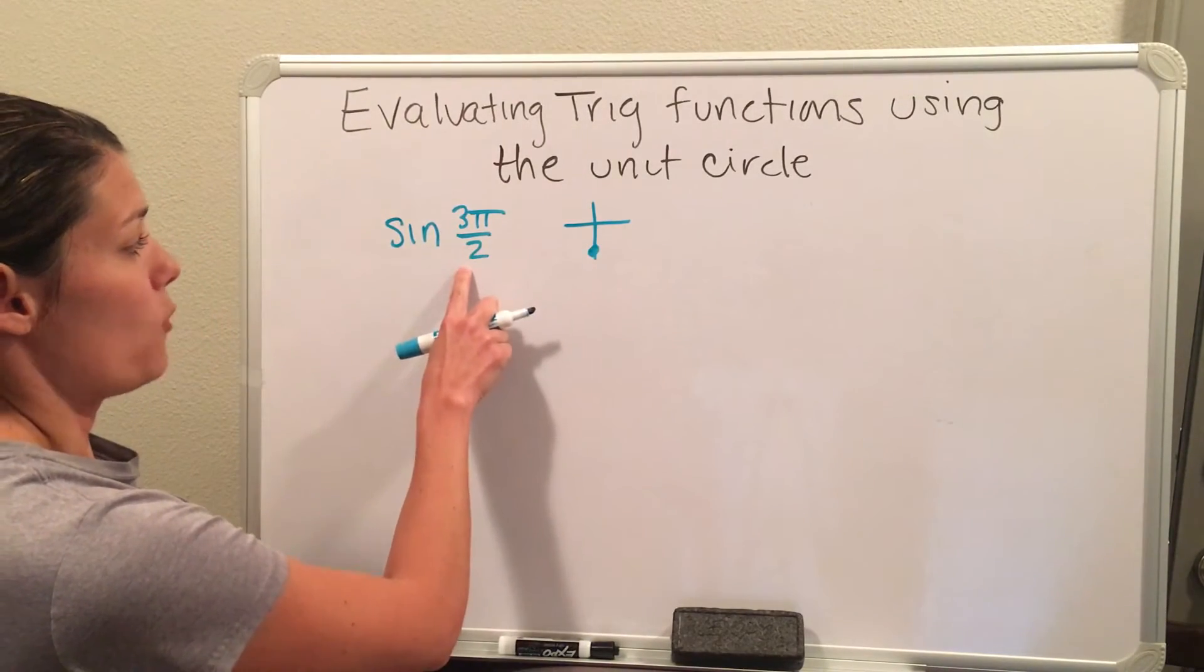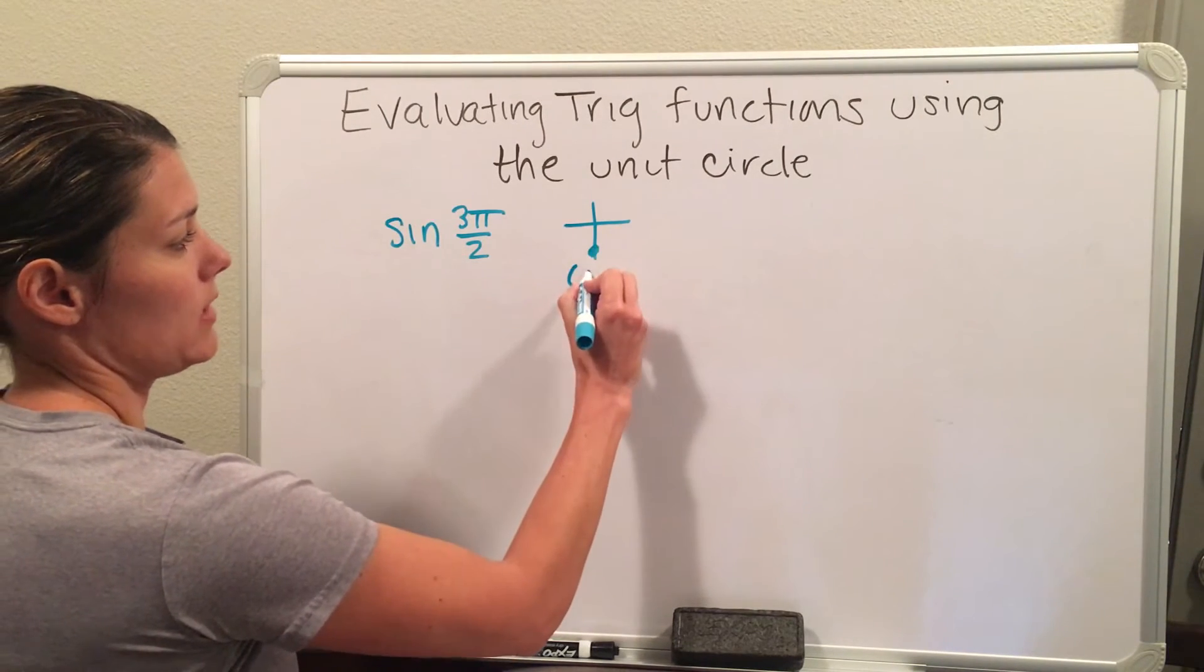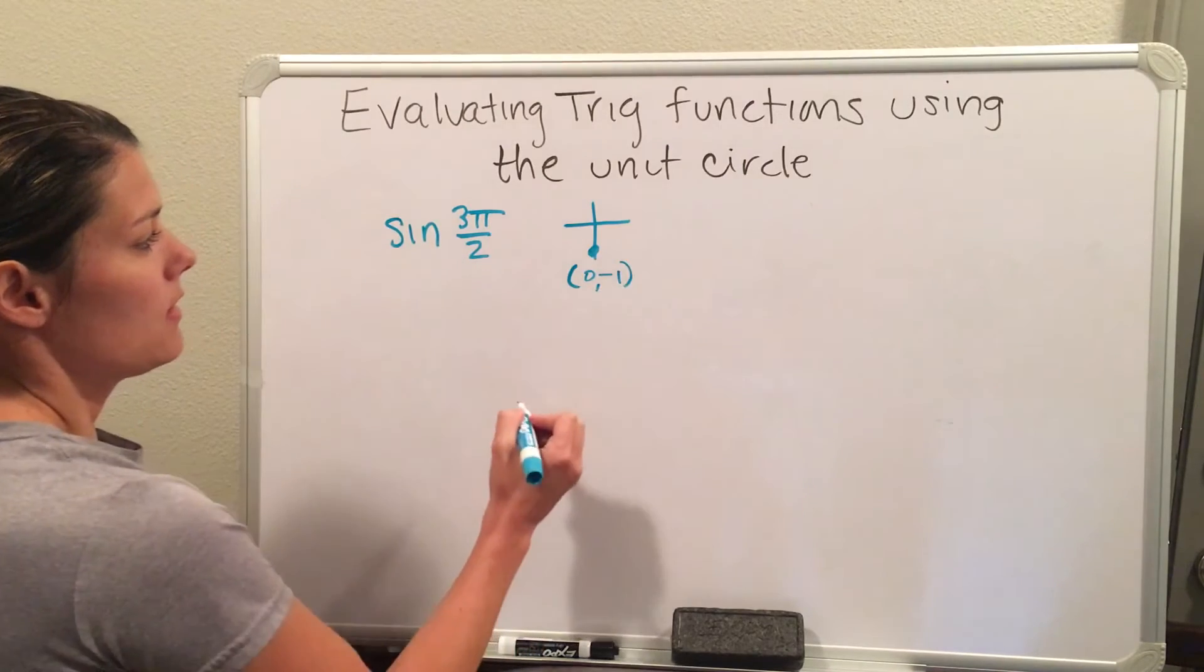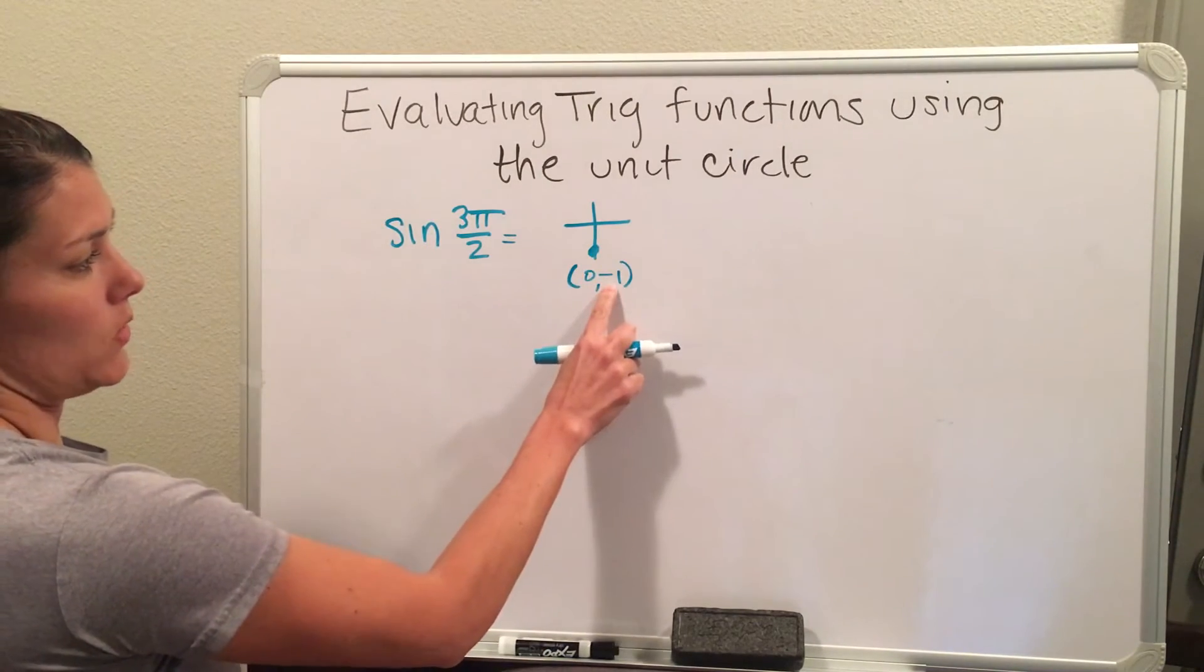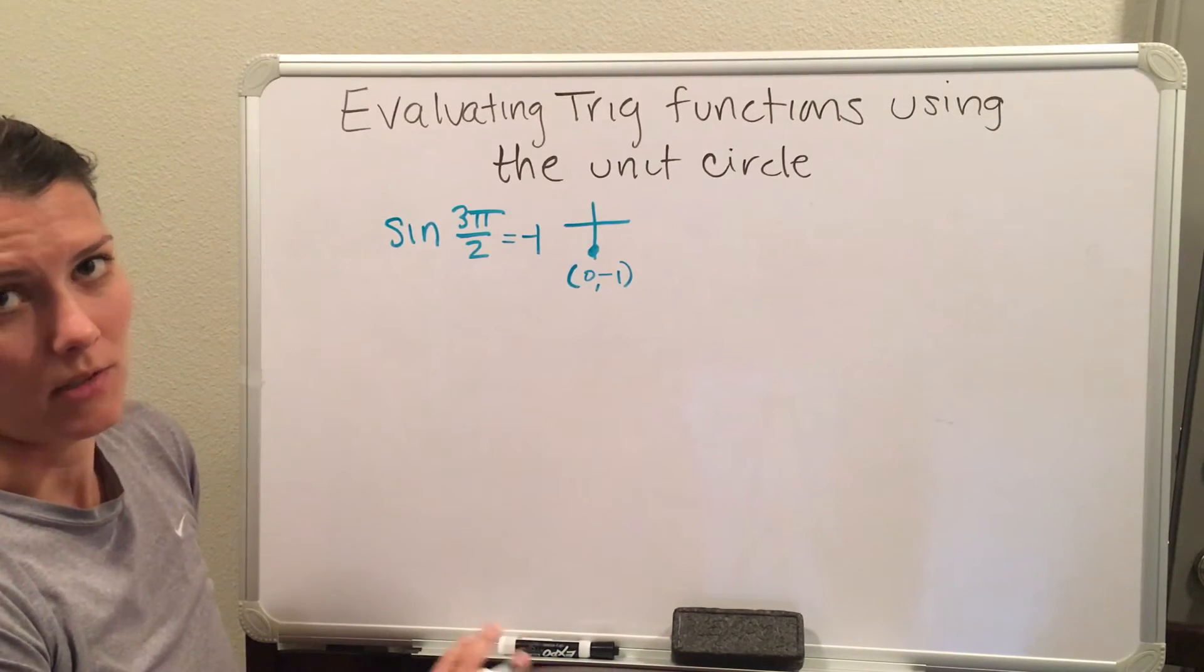Sine of 3π over 2 is my y value in the point. I also remember that this is the point (0, -1). So I know that my sine of 3π over 2 is going to be the y coordinate of that point. So my answer is -1.